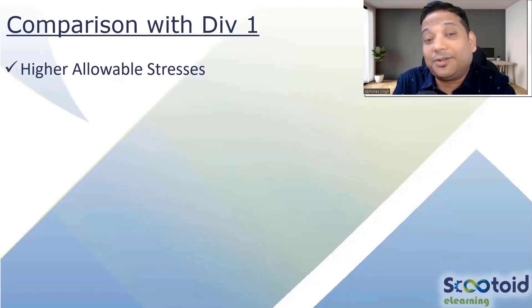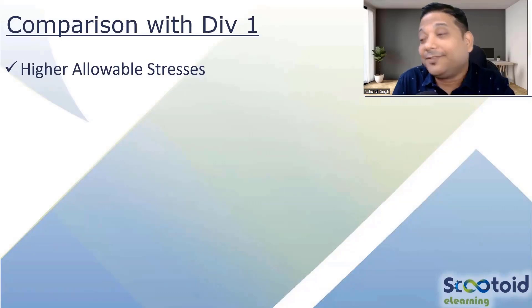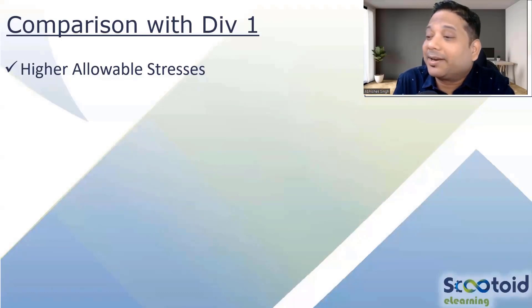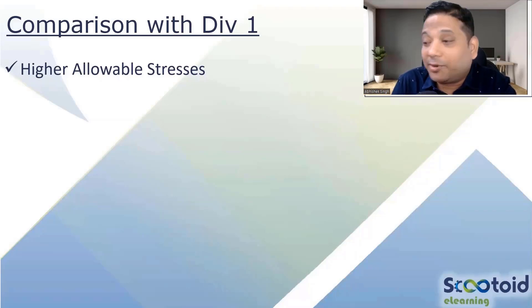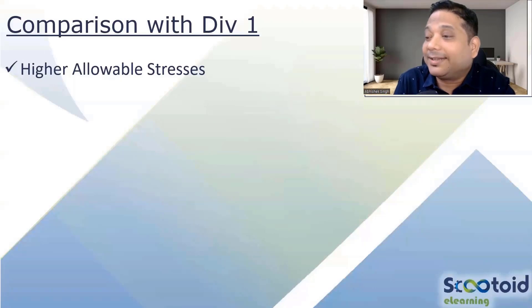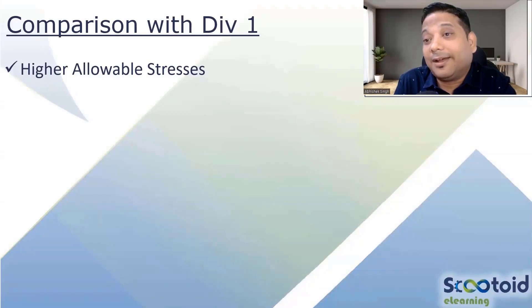In terms of non-destructive examination and weld joints, Division 2 is more stringent. No partial penetration welds and no fillet-only welds are allowed — only full penetration joints are required for Division 2. The weld joints must be very rigid. So welding-wise and NDE-wise, it is more conservative and more costly if you consider these terms.